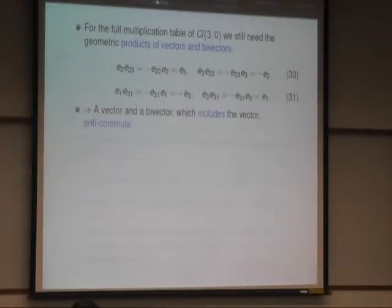So a vector and a bivector, which includes the vector, they anti-commute. So they are the same up to a sign, this negative sign here, so they anti-commute.